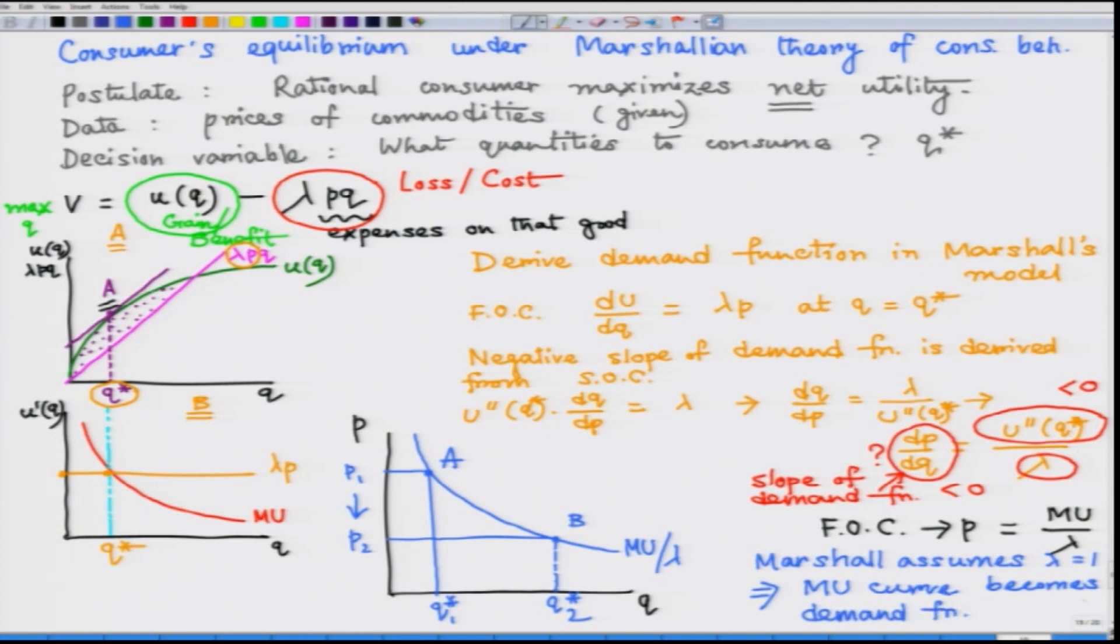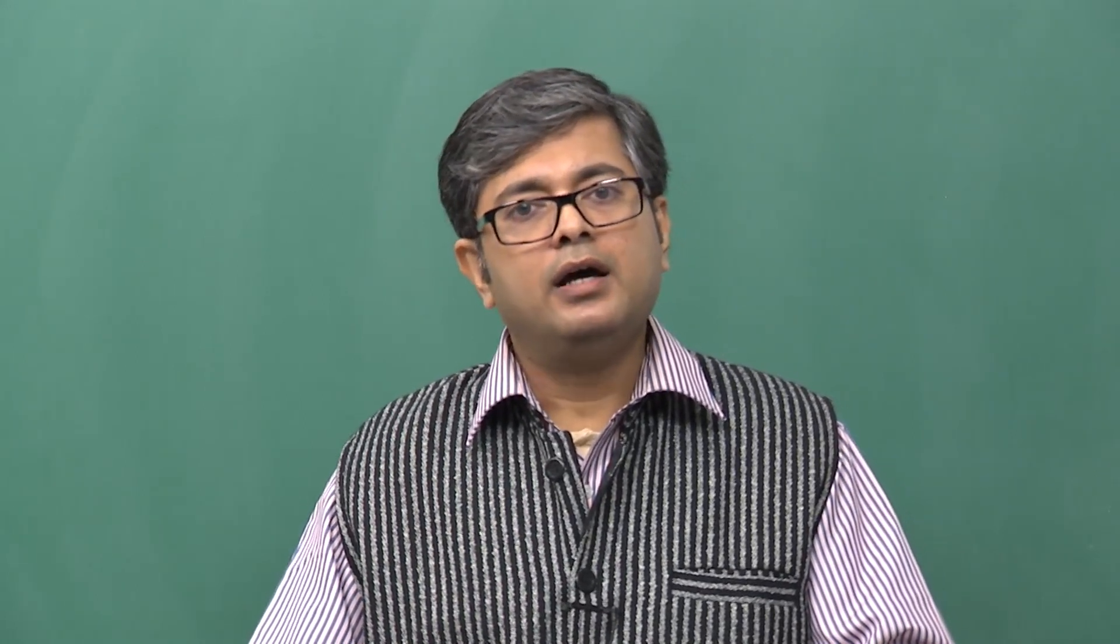Note that this is a very interesting result. In a single good Marshallian model the consumer has to spend the entire money income on that particular commodity only. So the P times Q has to always equal to M, the money income. What we can see here is that these P Q combinations along that convex to origin marginal utility curve will always give a fixed level of expenditure or money expenditure. That is why in a Marshallian world we can say that the demand function is a rectangular hyperbola.